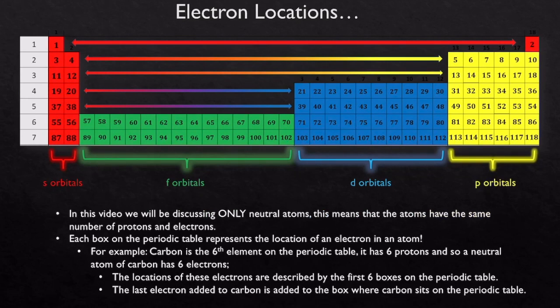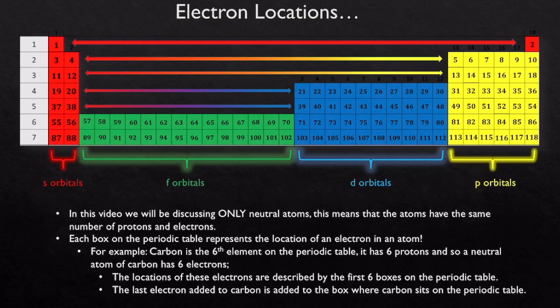In this video, we're only going to be writing electron configurations for neutral atoms — not ions. That means the atoms we're dealing with have equal numbers of protons and electrons. On the periodic table, all elements are listed with just atomic numbers, which is the number of protons in the nucleus. Since these are neutral atoms, each element going down a row has one more electron than the last, so atomic numbers also represent the number of electrons.